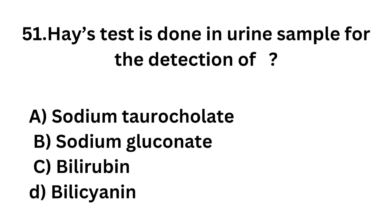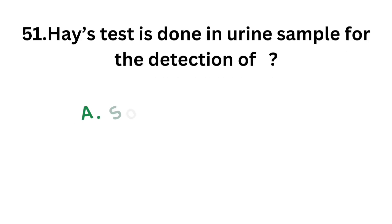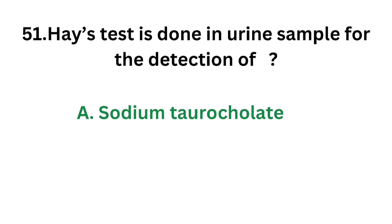Question number 51. Haze test is done in urine sample for the detection of: Option A - Sodium taurocholate; Option B - Sodium gluconate; Option C - Bilirubin; Option D - Bilicyanin. The correct answer is Option A, Sodium taurocholate. Haze test is the test for bile salt, and sodium taurocholate is one of the bile salts.